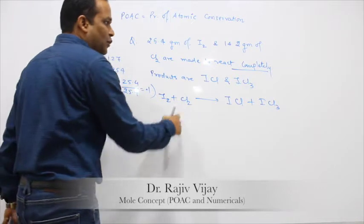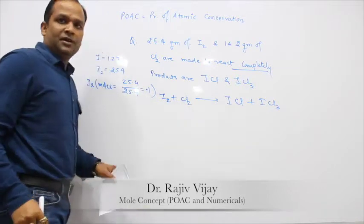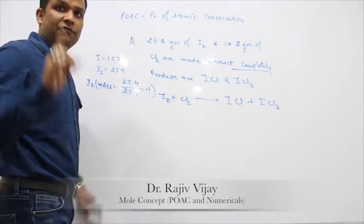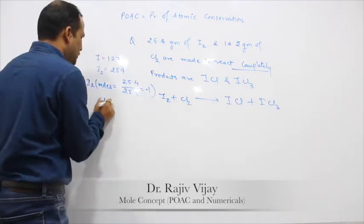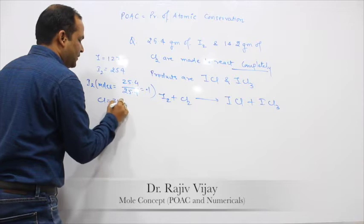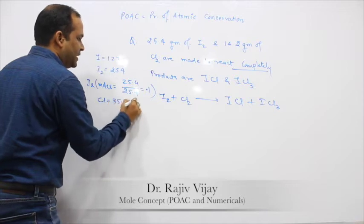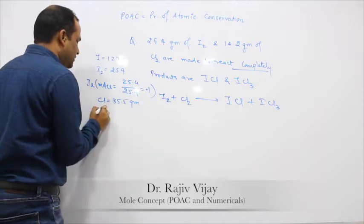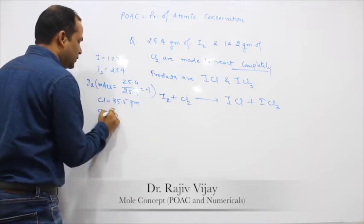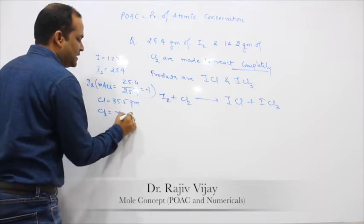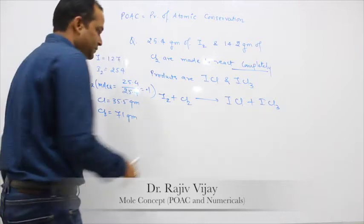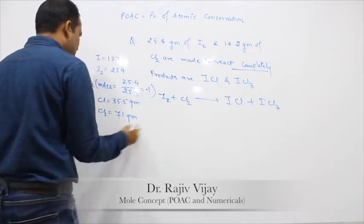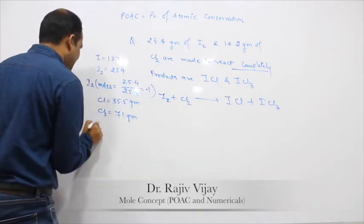Likewise for chlorine: the weight of one chlorine atom is 35.5 grams, therefore Cl₂ is 71 grams. Moles of Cl₂ = 14.2 ÷ 71 = 0.2 moles.